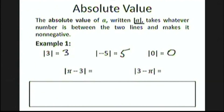The absolute value of π minus 3 is just π minus 3. Why? Because π minus 3 is a positive number. Remember that π is approximately 3.14, but what's most important is that it's larger than 3. So when we subtract 3 from π, we still have a positive number. So when you take the absolute value, you can just remove the two bars.